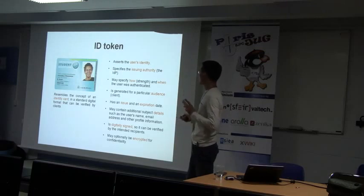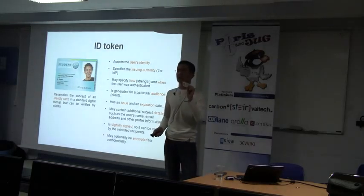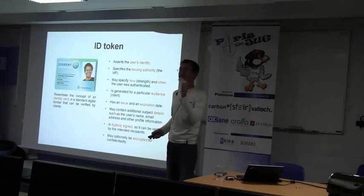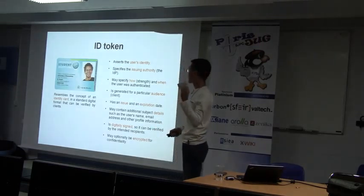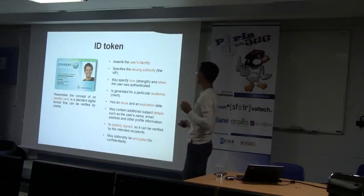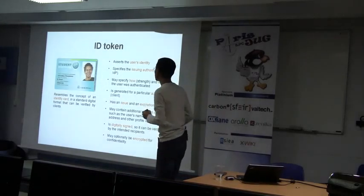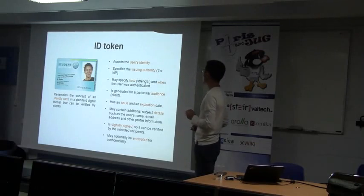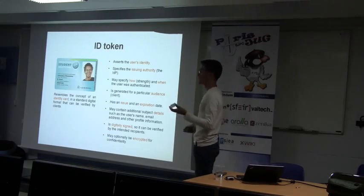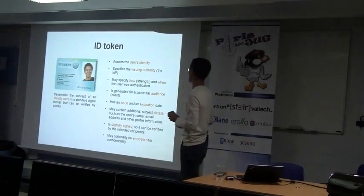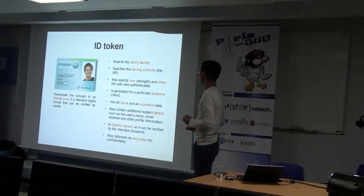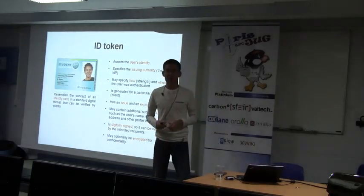In contrast to identity cards, ID tokens are always generated for a particular client — the receiving client is always encoded inside the token. They do have an expiration date; they don't last forever. They may also contain additional data such as the user's email, name, and other information. And finally, the token is cryptographically secured, which normally happens using an RSA signature.